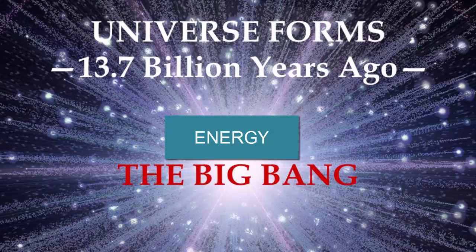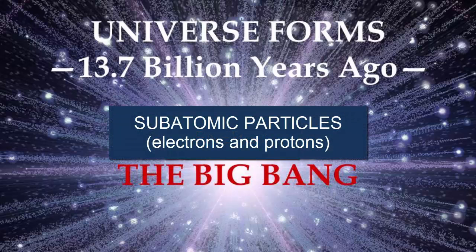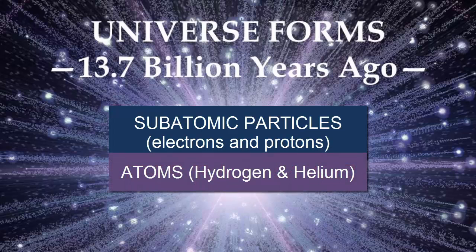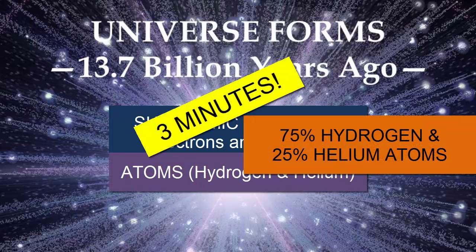In the first few seconds and minutes after the initial explosion, some of the energy transformed into subatomic particles like protons and electrons. The first atoms form, and by three minutes after the Big Bang, the universe contained by mass 75% hydrogen atoms, identified by having just one proton in the nucleus, and 25% helium atoms, identified as having just two protons in the nucleus.